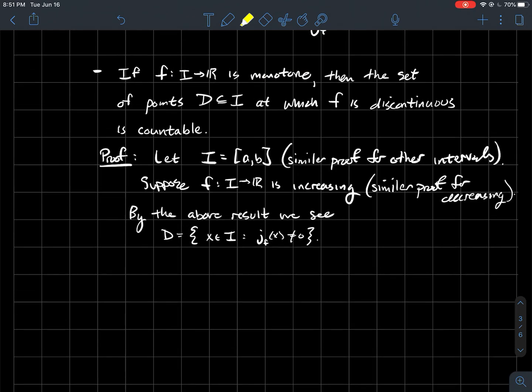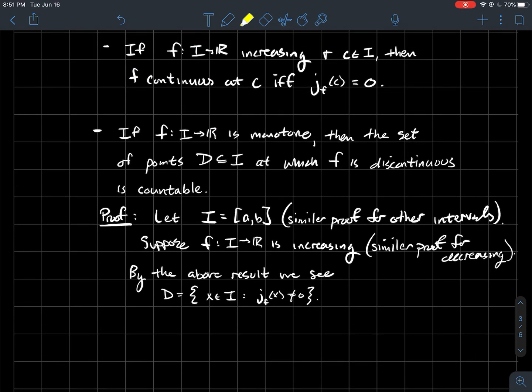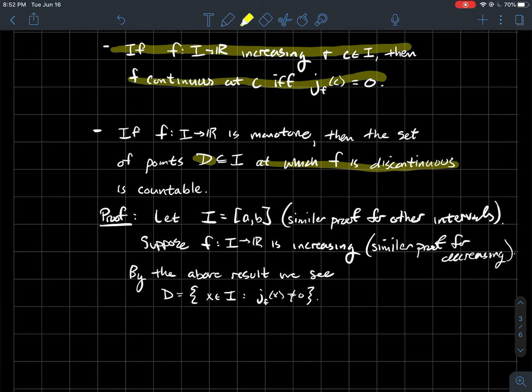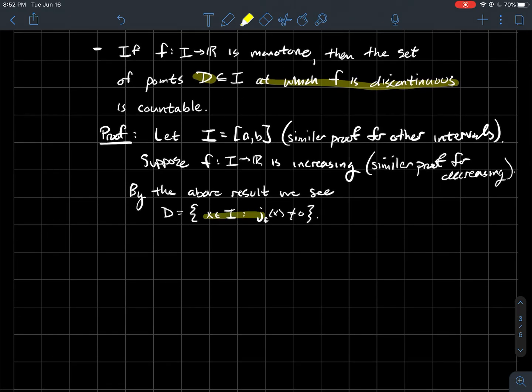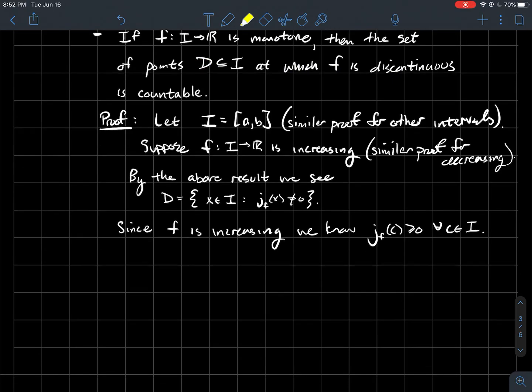All right, so by the above then, what is this? So D is supposed to represent the set of points in the domain where f is discontinuous, call those the discontinuities of f. And so in that case, if you think about the result we just did right above it, you're continuous if and only if the jump is zero. Therefore, the set D of discontinuities has got to be all the points where the jump is non-zero. I'm not saying it has to be finite either. So it's got to be the points where the jump is non-zero.